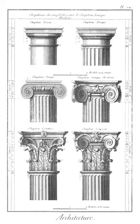Gambrel: a symmetrical two-sided roof with two slopes on each side. Gargoyle: a carved stone grotesque with a spout designed to convey water from a roof.